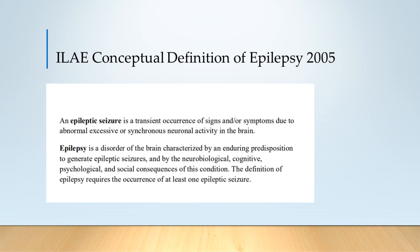Epilepsy, however, is a disorder of the brain characterised by an enduring predisposition to generate epileptic seizures and by the neurobiological, cognitive, psychological and social consequences of this condition. The definition carries on: epilepsy requires the occurrence of at least one epileptic seizure. That's quite a wordy conceptual definition and was not easy to use in clinical practice, and that prompted a practical definition to be designed in 2014.